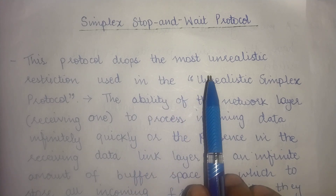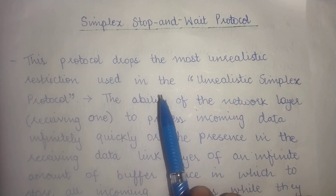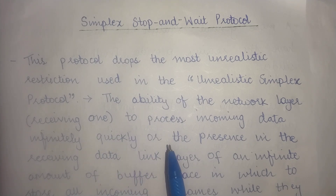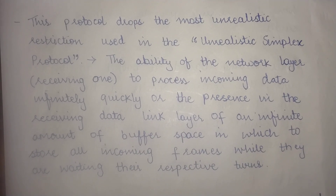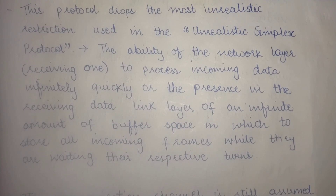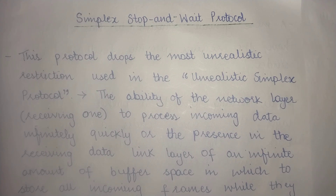So it drops this unrealistic situation. It says we do not assume that the receiving network layer would be able to process incoming data frames infinitely quickly, and we do not assume that the receiving data link layer has an infinite buffer space. These two assumptions have been dropped in the stop and wait protocol.